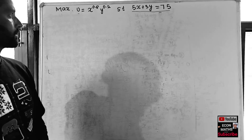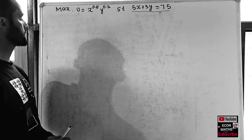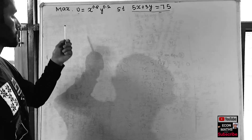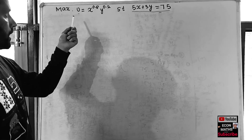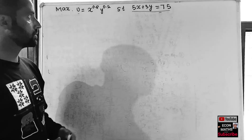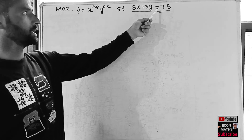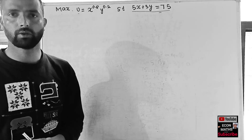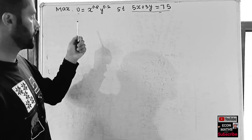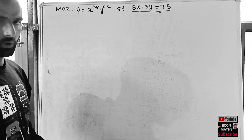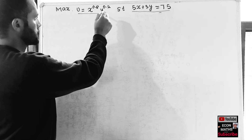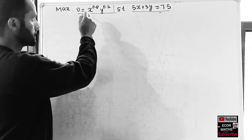Hi, this is Halal. In this video on the mathematical economics series, we will try to solve a maximization problem: U = x^0.8 * y^0.2, subject to the constraint 5x + 3y = 75. This is a problem on constrained optimization — we have to find the optimal values of x and y. This is called the objective function, and 5x + 3y = 75 is the constraint.